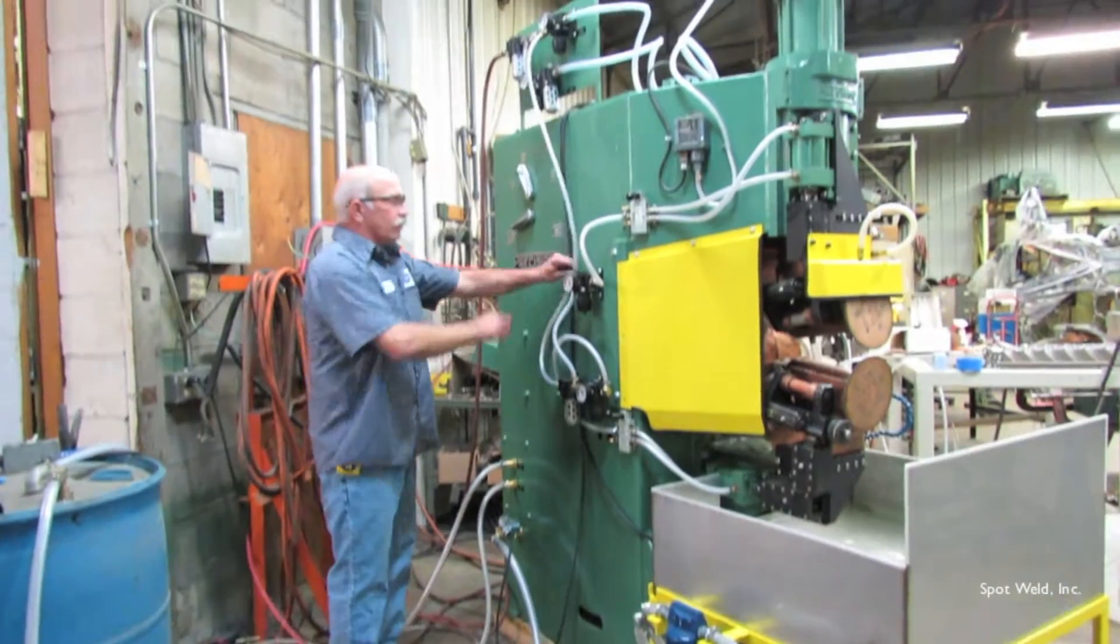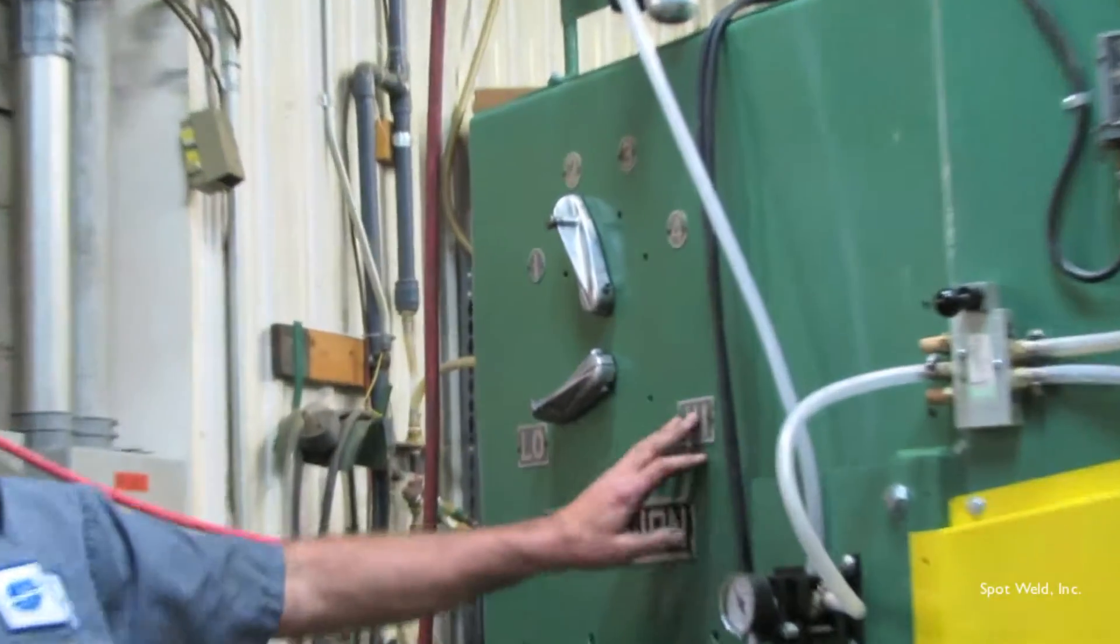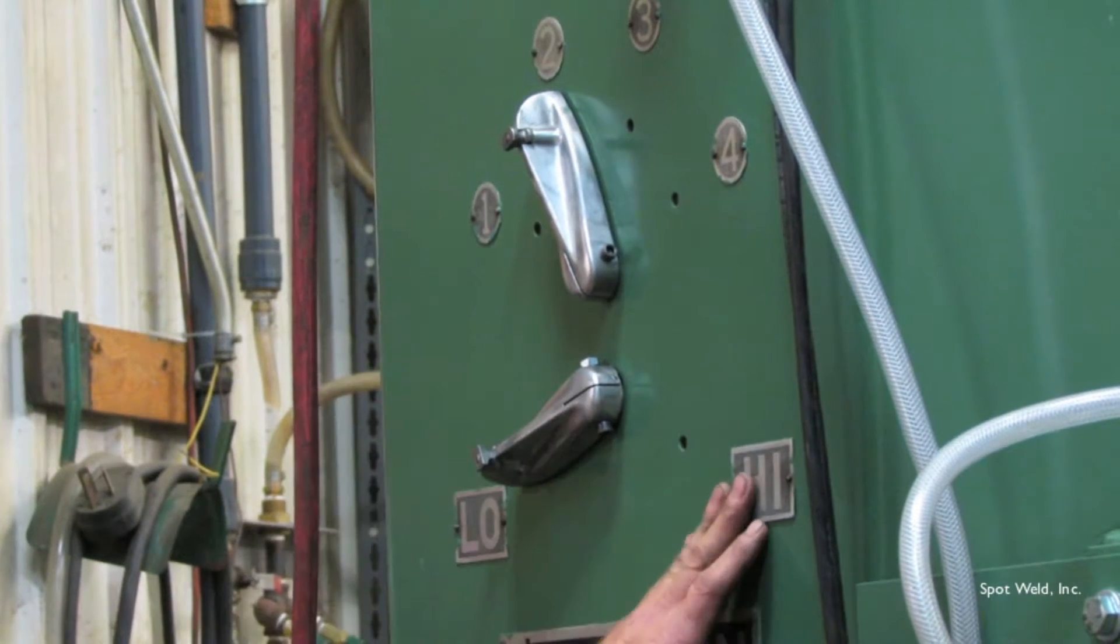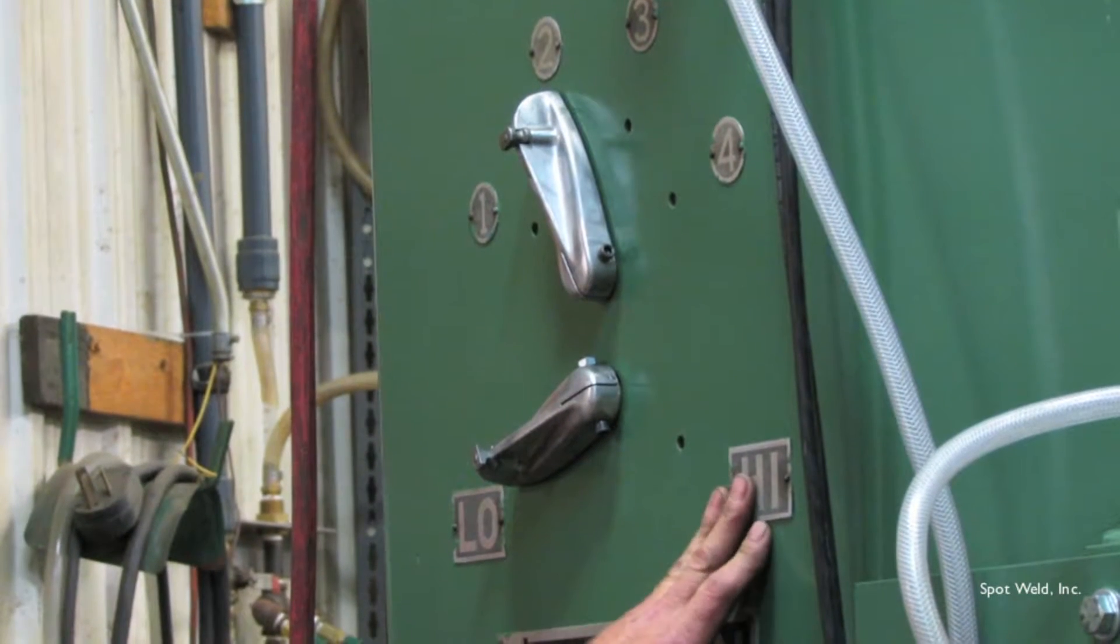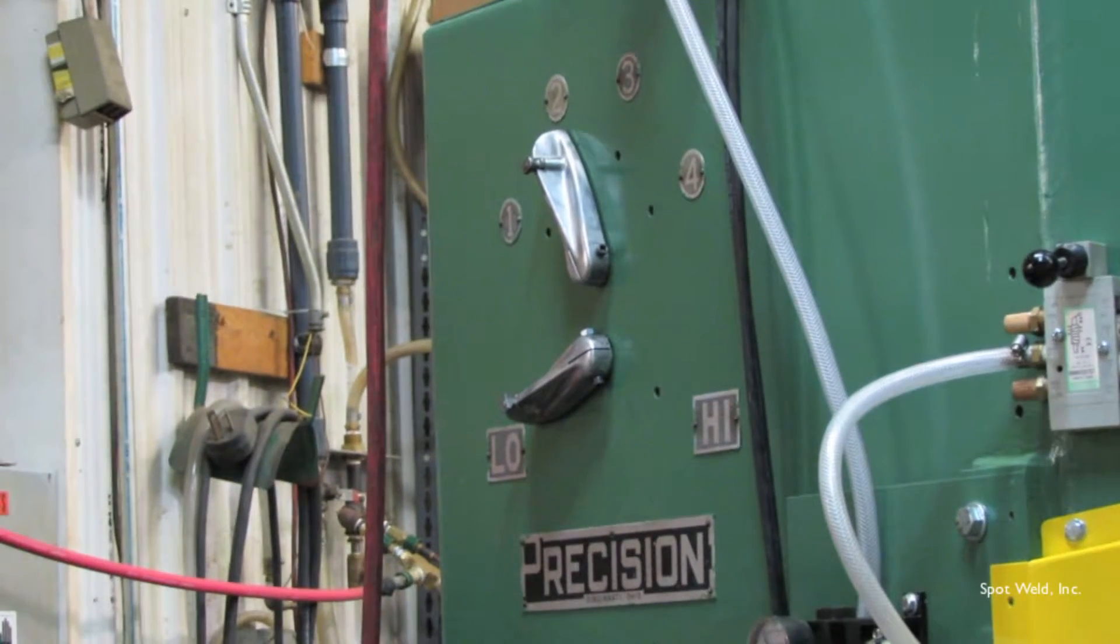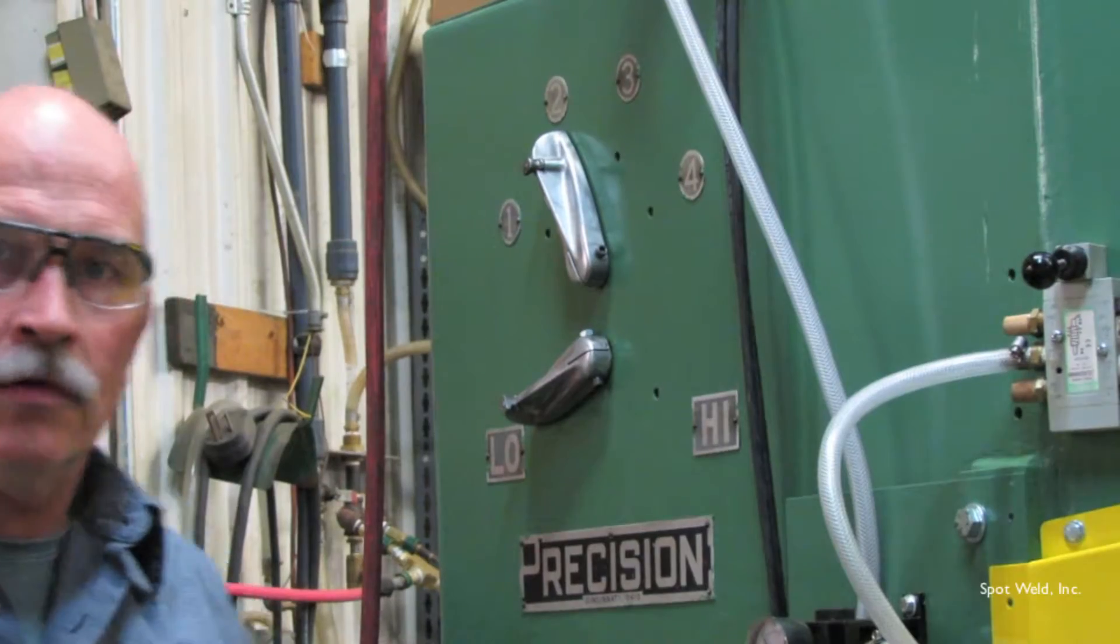Over here, we also have a low and high tap switch. Low for less current, higher for more current at the wheels. And a one, two, three, four selector switch. Shouldn't have to move that very often.